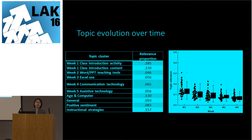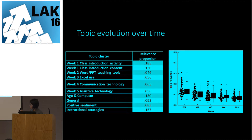Topic modeling is probability-based. It treats each document as a probability distribution across different topics, and each topic as a probability distribution across a collection of words. We can see in a table the relevance proportion for a given student journal document, where each of the 10 topics has a relevance proportion indicating how related that document is to each topic. Placing these relevance proportions on a timeline gives an idea of how topics evolve over time.